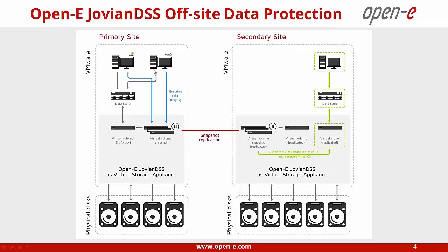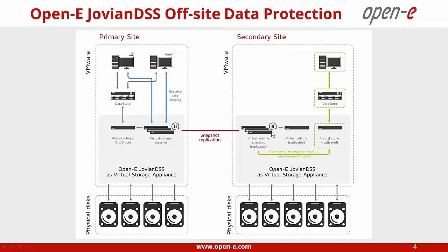On my machine I have VMware installed as the operating system controlling the server. On the VMware server, as a first virtual machine, will be JovianDSS working as a virtual storage appliance. The VSA creates a virtual disk, on that virtual disk we make a data store, and on this data store we have our virtual machines. JovianDSS is able to make snapshots very frequently — in our demo we use snapshots every minute, and I tested even every 20 seconds. Thanks to the Off-site Data Protection Service, these snapshots are moved in the background without big load to a second location or second pool.